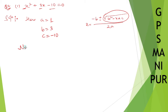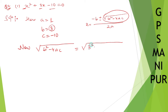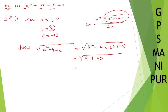Now root over b squared minus 4ac: b is 3, so 3 squared minus 4 into a, which is 1, into c, which is minus 10. That gives us root over 9 minus into minus, which becomes plus 40. So 9 plus 40 is 49, and the square root of 49 is 7.